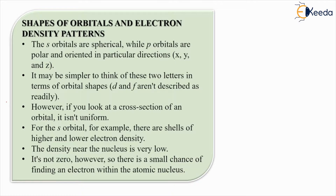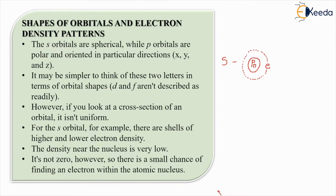Shapes of orbitals and electron density patterns. The S orbital is spherical. Now what do we mean by spherical? Let me draw S over here - I'm drawing a proton and a neutron inside a nucleus, and the electron which is going around it is spherical in nature. That means the electron is going in a circular format around the nucleus.